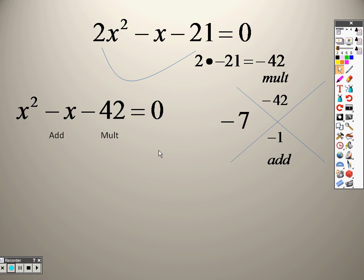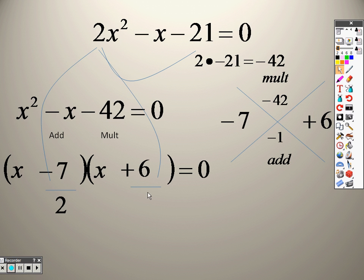And this one is a little simpler. It's negative 7 and positive 6. So, I plug the negative 7 in, plug in the positive 6. So I slide by 2, which means I divide by 2 on both of those.